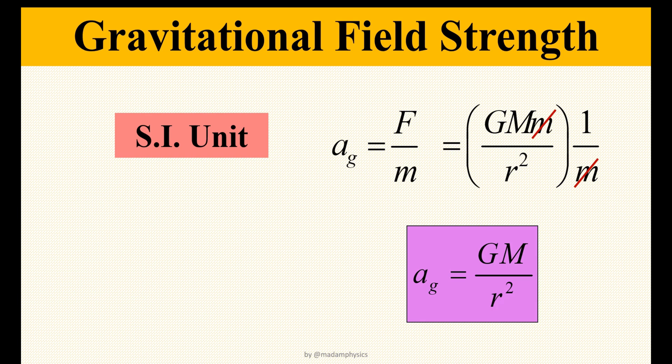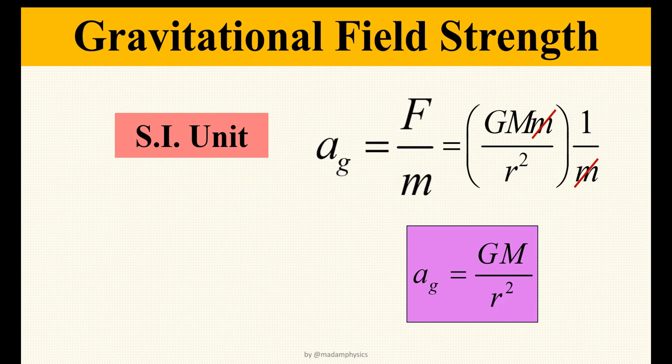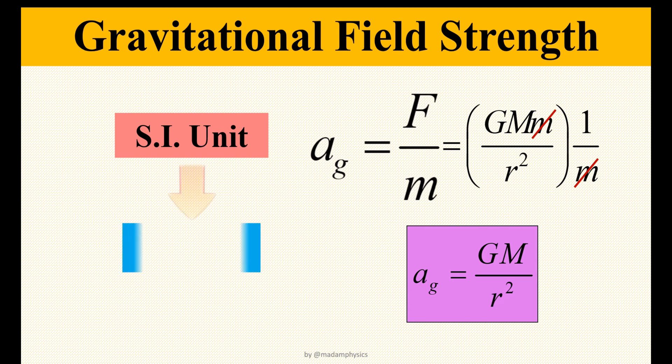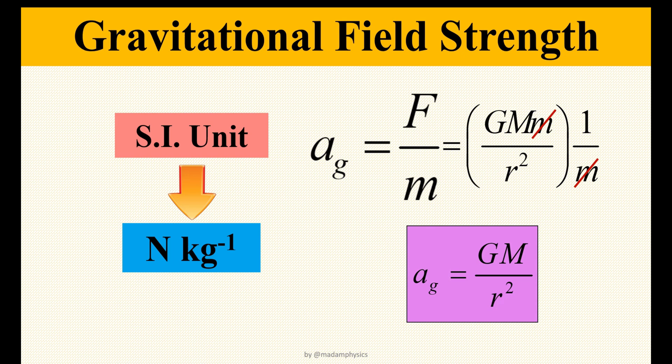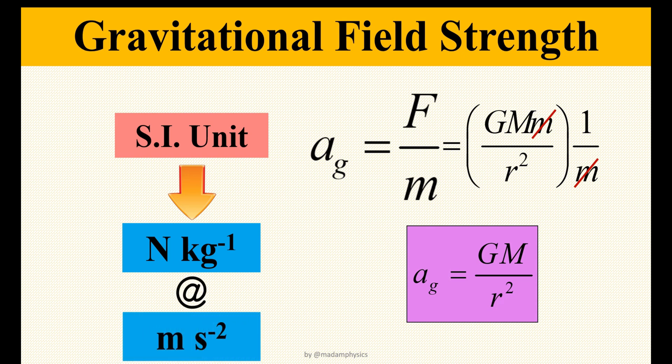Let's look at the SI unit for gravitational field strength. Since Ag is defined as force over mass, the unit of Ag is Newton per kilogram. Ag can also be written as m/s² because that is the unit of acceleration.